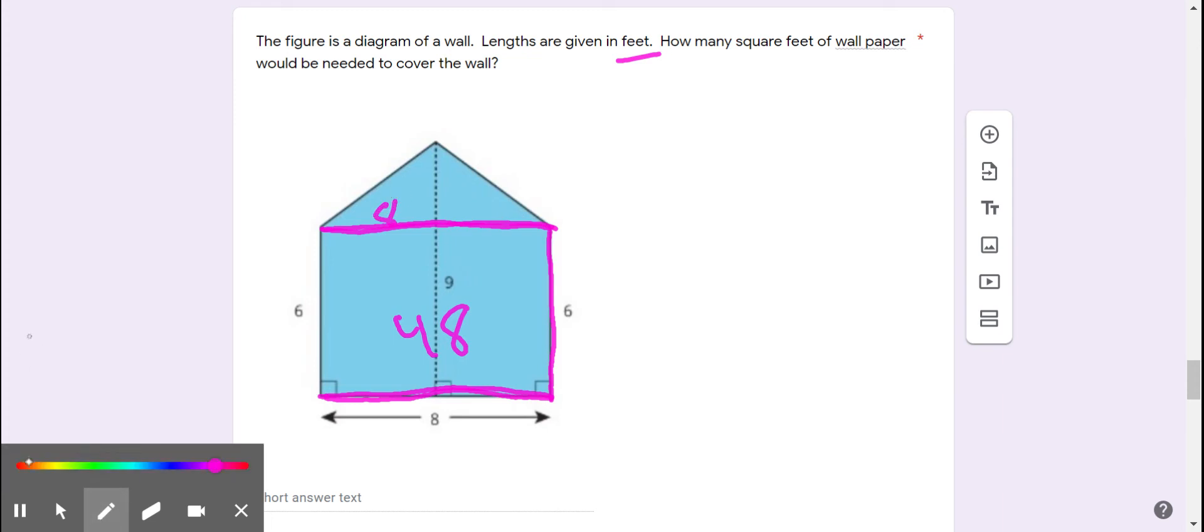And if from the tip of the roof all the way down to the floor is 9 feet, and this amount of it is 6 feet, the remainder has to be 3 feet. 8 times 3 is 24. Half of 24 is 12.